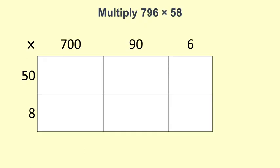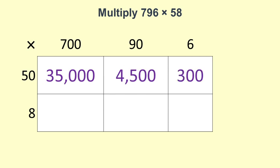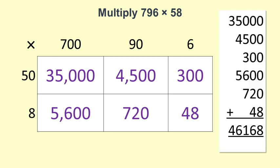Or we can use the area model or box method. 50 times 700 is 35,000. 50 times 90 is 4,500. 50 times 6 is 300. 8 times 700 is 5,600. 8 times 90 is 720. 8 times 6 is 48. Then we add these up and get 46,168.